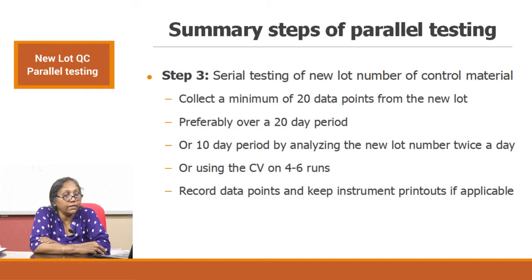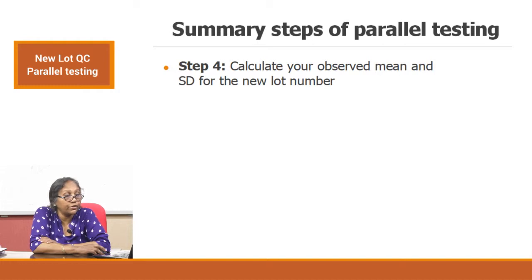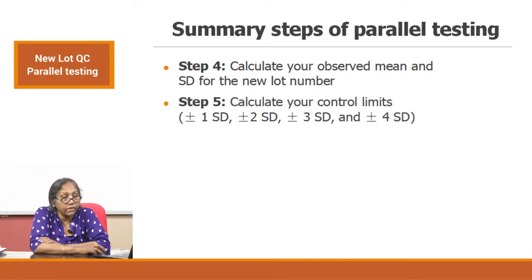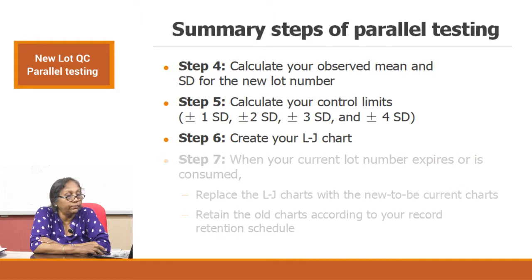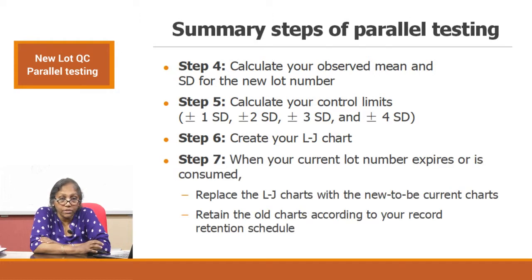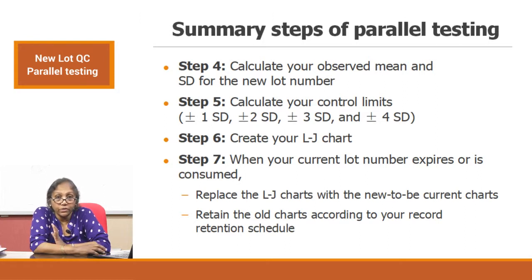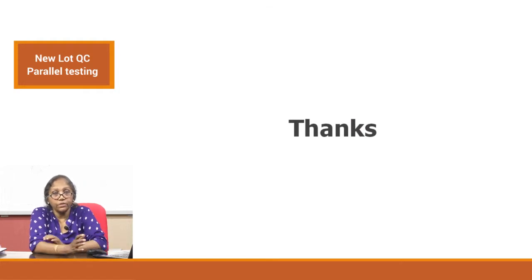Record the data points and keep the instrument printout if applicable. Step 3: serial testing of new lot — collect a minimum of 20 data points, preferably over a 20-day period. If not possible, at least a 10-day period by analyzing the new lot twice a day. Or if that is also not possible, use the CV method on 4 to 6 runs as suggested. Step 4: calculate your observed mean and standard deviation for the new lot; calculate control limits at 1 SD, 2 SD, and 3 SD, and create your Levey-Jennings chart.